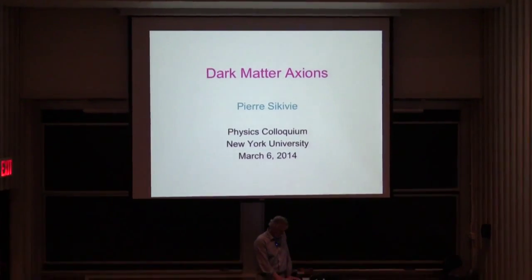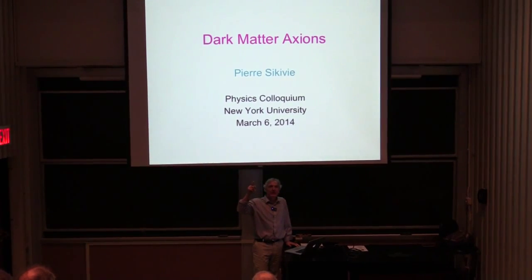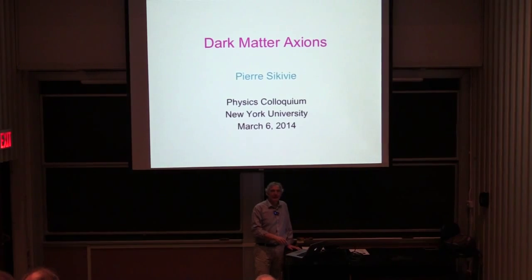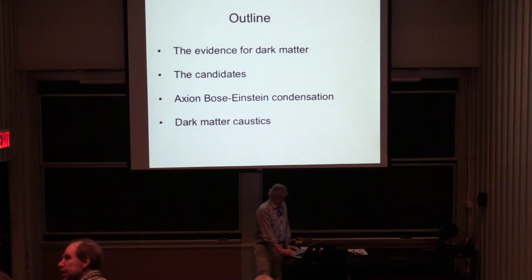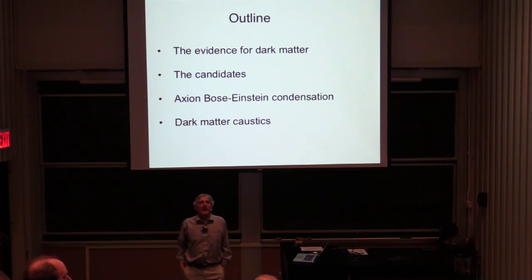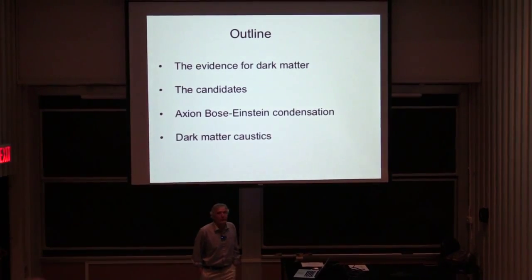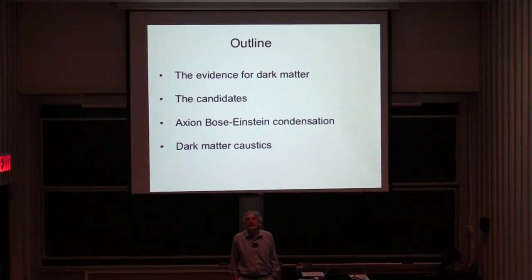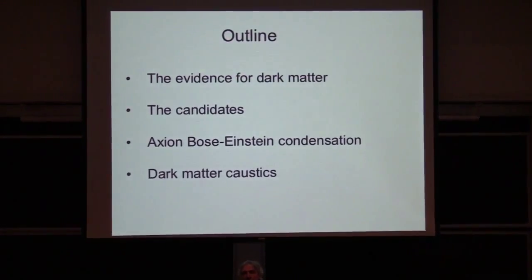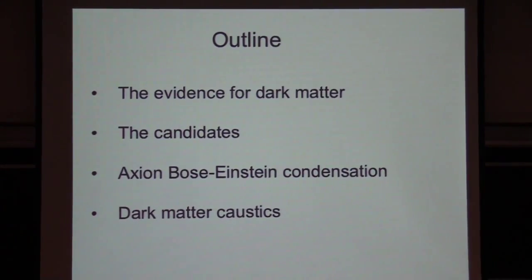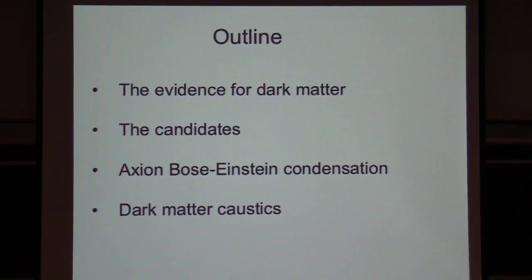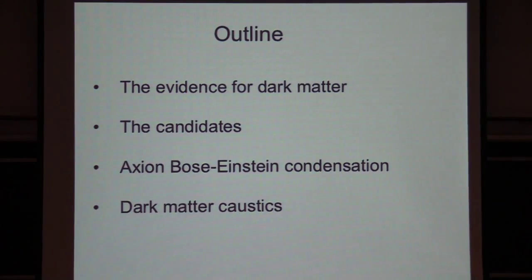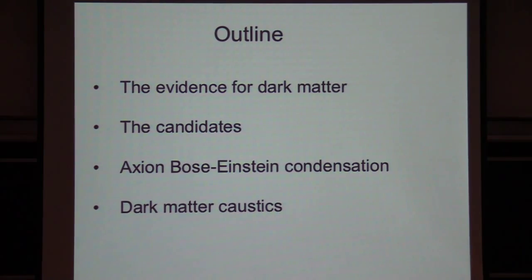So I thought I would first review the evidence for dark matter to set the stage, then briefly review the different candidates put forth by particle physicists, and then argue one of them is special because it forms a Bose-Einstein condensate. I'll go even further and claim there is observational evidence that at least part of the dark matter is axions based upon this distinction. It's a rather ambitious talk.